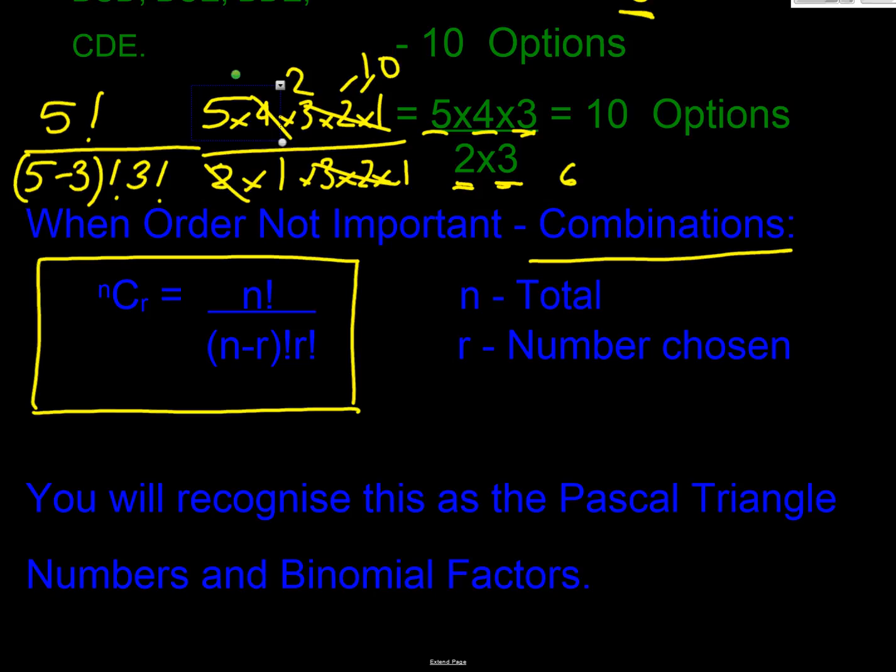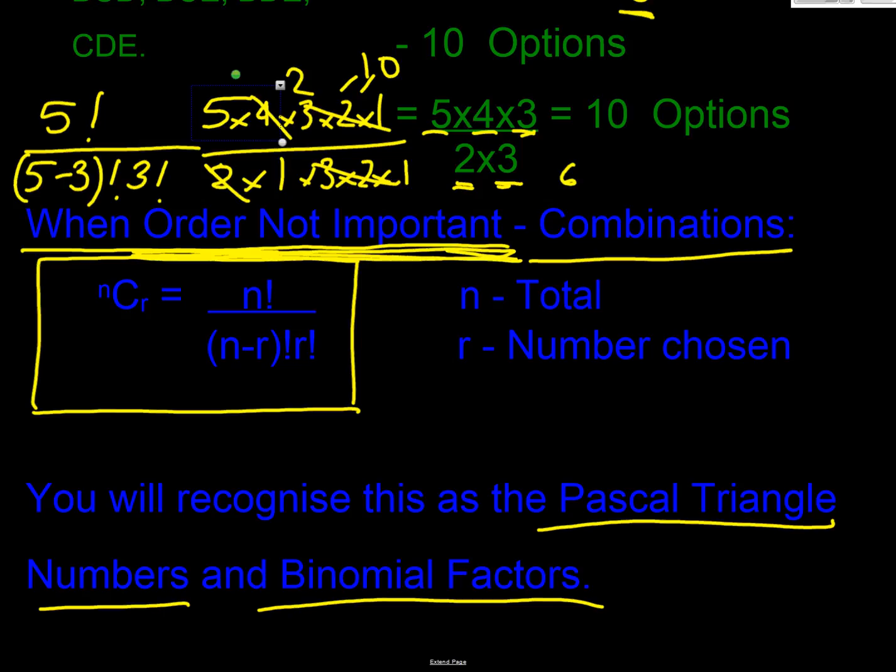Now you will probably recognise these as being the values we're seeing in the Pascal's triangle and the binomial factors. So that's why they're the same. Why do they appear in the Pascal's triangle and binomial factors? Because the order's not important that we go through this. And if you think about it, if we are doing probability and we're going to roll a dice and we're going to get 1 six out of 5 rolls. Well, it could be the first, it could be the second, it could be the third, it could be the fourth, it could be the fifth. We don't care which one it is. So order is not important.